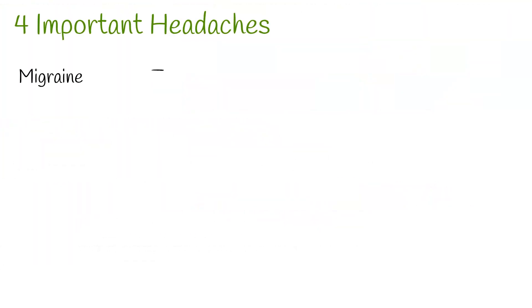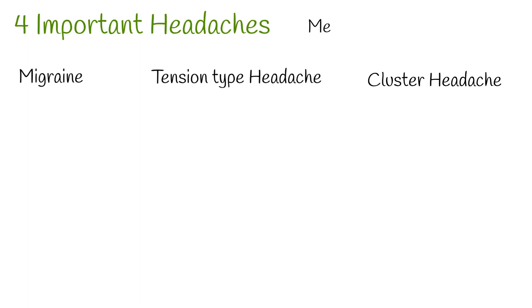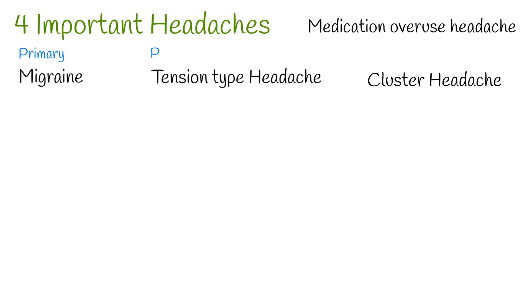More than 150 types of headache exist, but we will discuss the most common types. There are four most important and common headaches: three primary headaches — migraine, tension-type headache, and cluster headache — and one secondary headache, medication overuse headache.